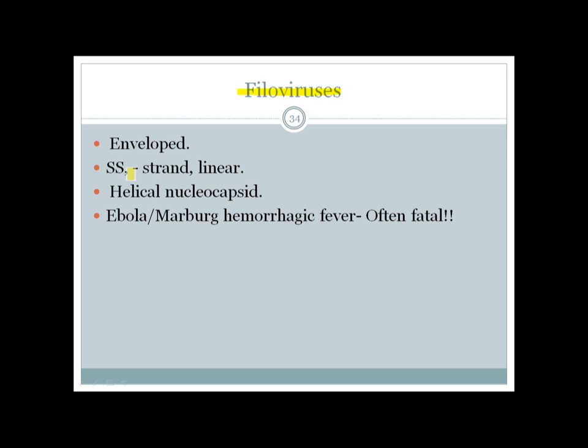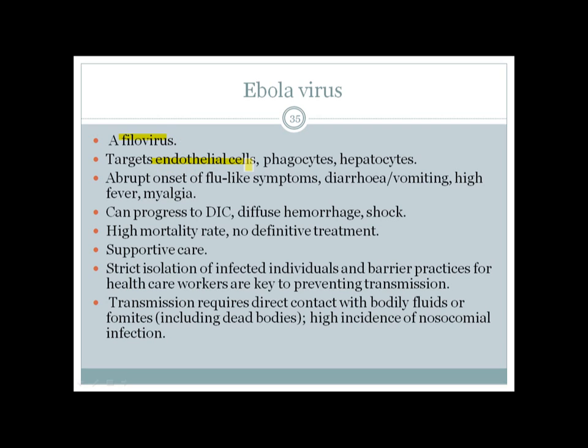Filoviruses — F for Filovirus in the mnemonic 'fail replication' — are negative-strand viruses. Ebola hemorrhagic fever is often fatal. Ebola virus targets endothelial cells, phagocytes, and hepatocytes. As a hemorrhagic fever virus it can cause DIC (disseminated intravascular coagulation) and diffuse hemorrhagic shock. It initially presents with flu-like symptoms then diarrhea, vomiting, and high fever.